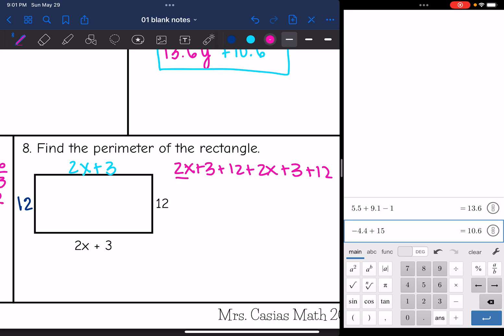And 2X plus 2X, those are the only X's there. 2X plus 2X is 4X. And then 3 plus 12 is 15 plus 3 is 18 plus 12 is 30. So 4X plus 30 is the final simplified expression there.